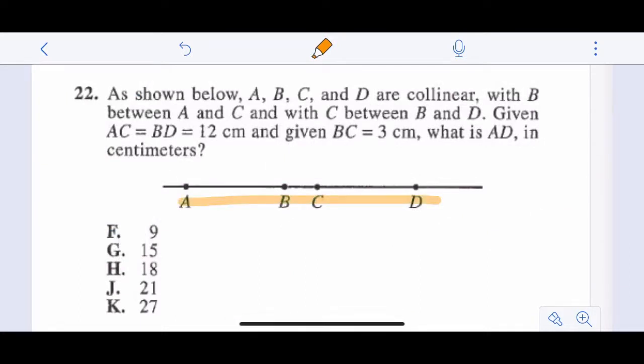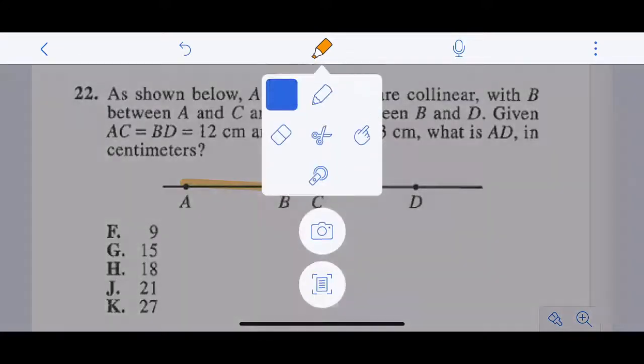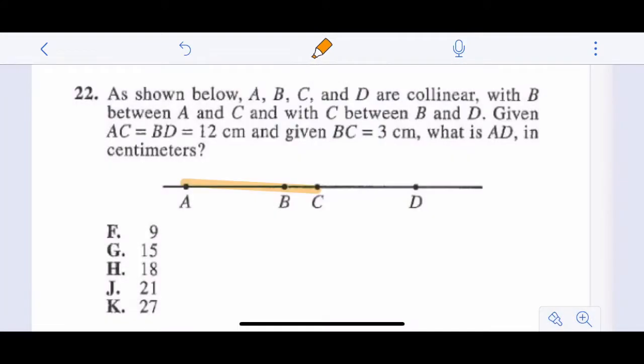Collinear. So these are all on one line, that's all that means. With B between A and C, and C between B and D. So these are just between A and D. Given that AC, so AC equals 12, and BD equals 12. So BD also equals 12. And BC equals 3. So BC equals 3.